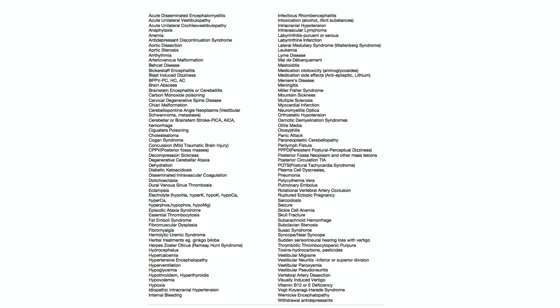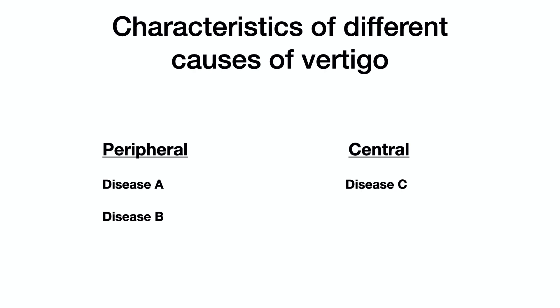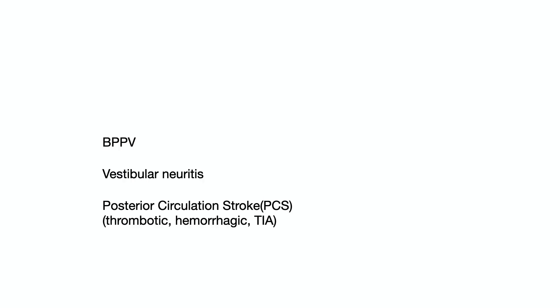So why don't they work? First of all, no central versus peripheral table will be able to properly assign all causes of vertigo to one of these categories. For a table to work in theory, if you had diseases A and B on the peripheral side, they'd have to have many features in common, and disease C on the central side should not share any features with A or B. The table should cover what I term the big three: BPPV, vestibular neuritis, and posterior circulation stroke syndromes, which include thrombotic, hemorrhagic, and TIA.